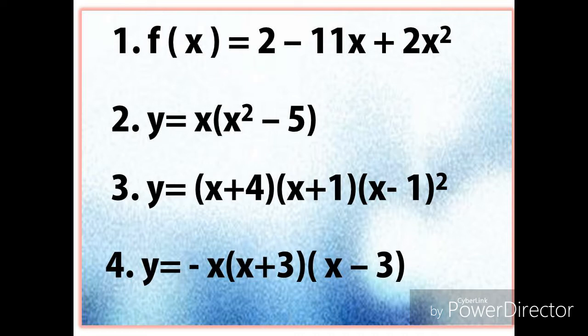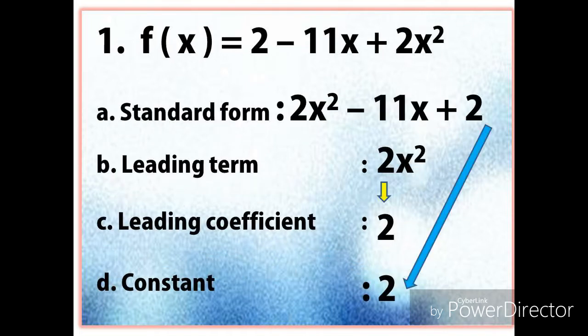For example number one, we have f of X equals 2 minus 11X plus 2X squared. We rewrite it in standard form by arranging terms in decreasing order of degree, giving us 2X squared minus 11X plus 2. The leading term is 2X squared, the leading coefficient is 2, and the constant is also 2.